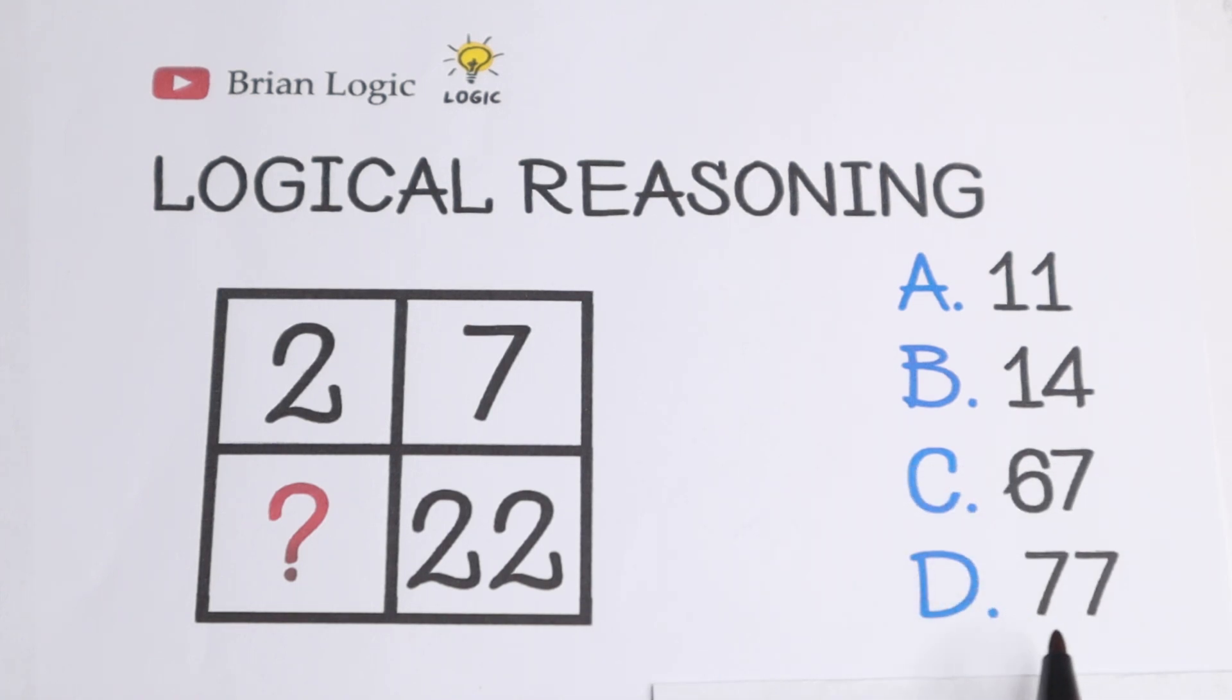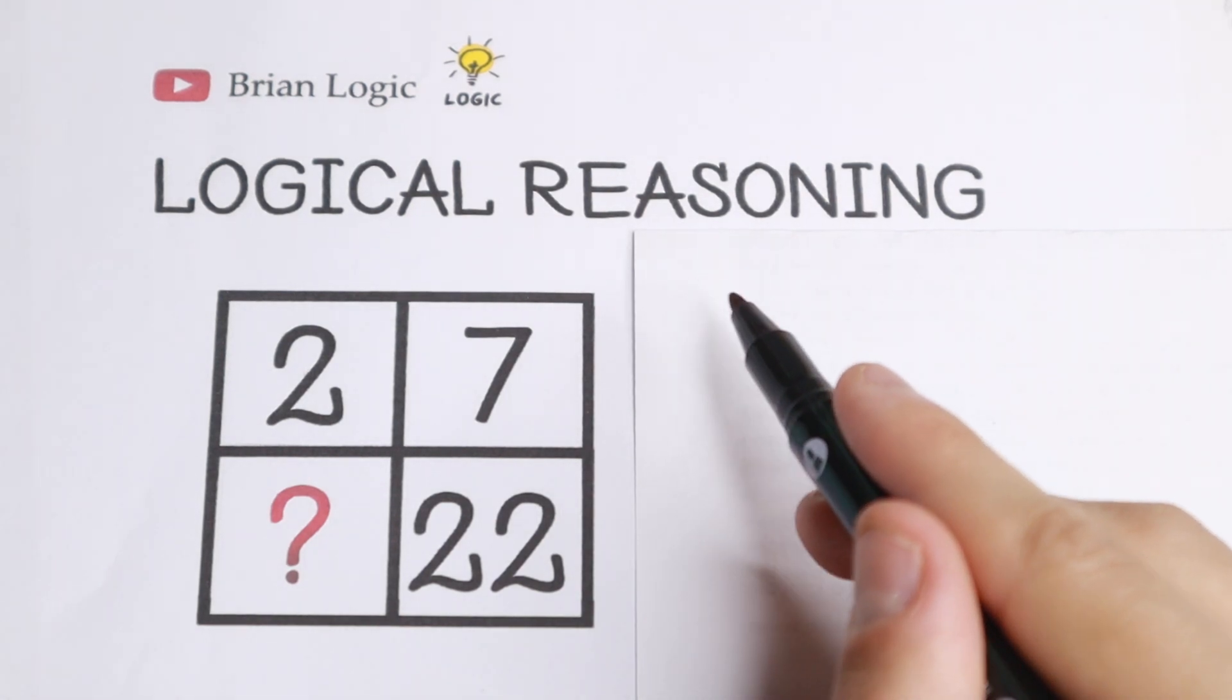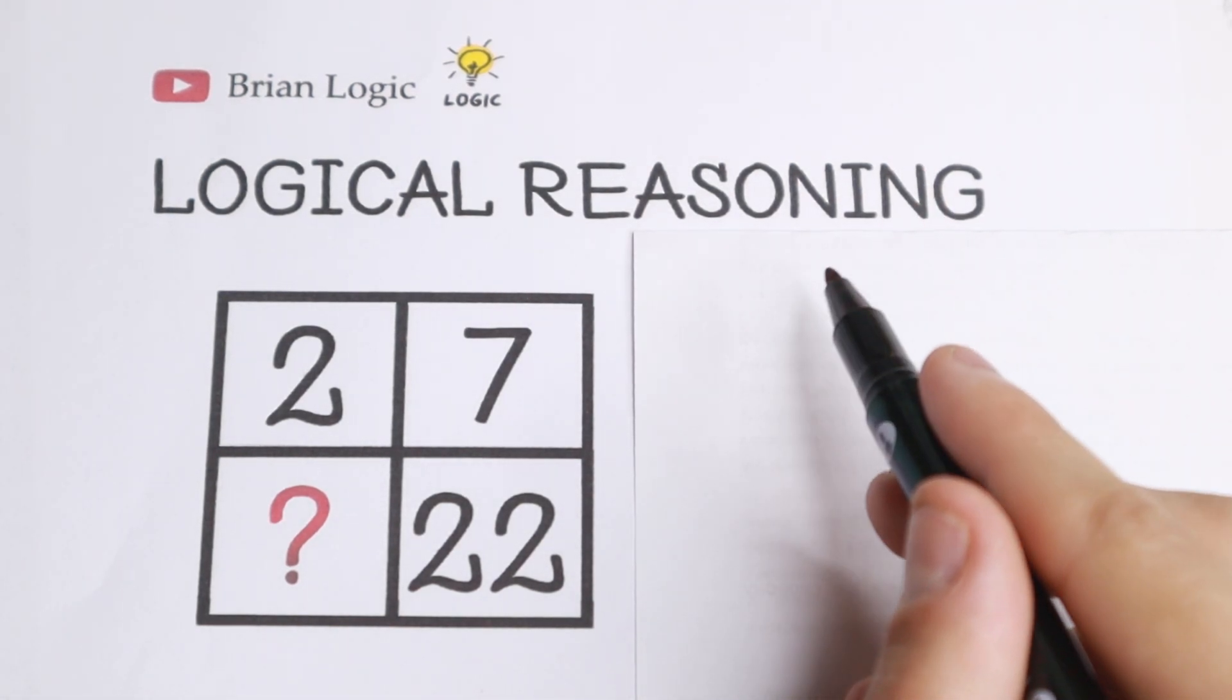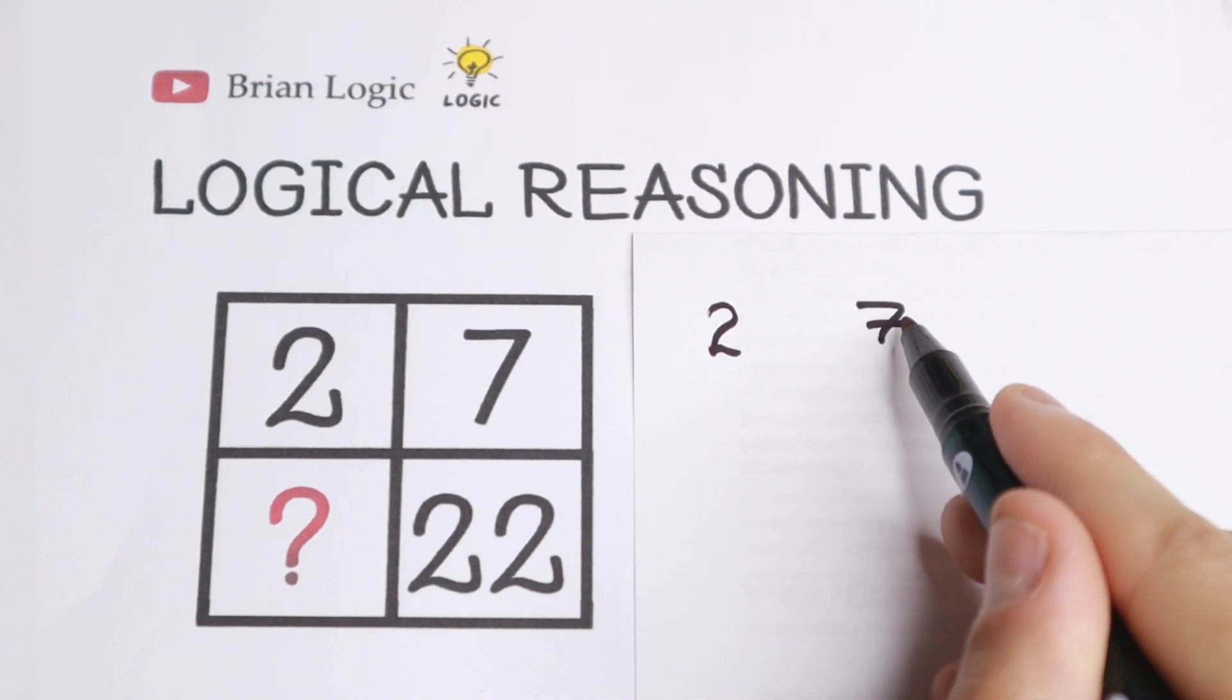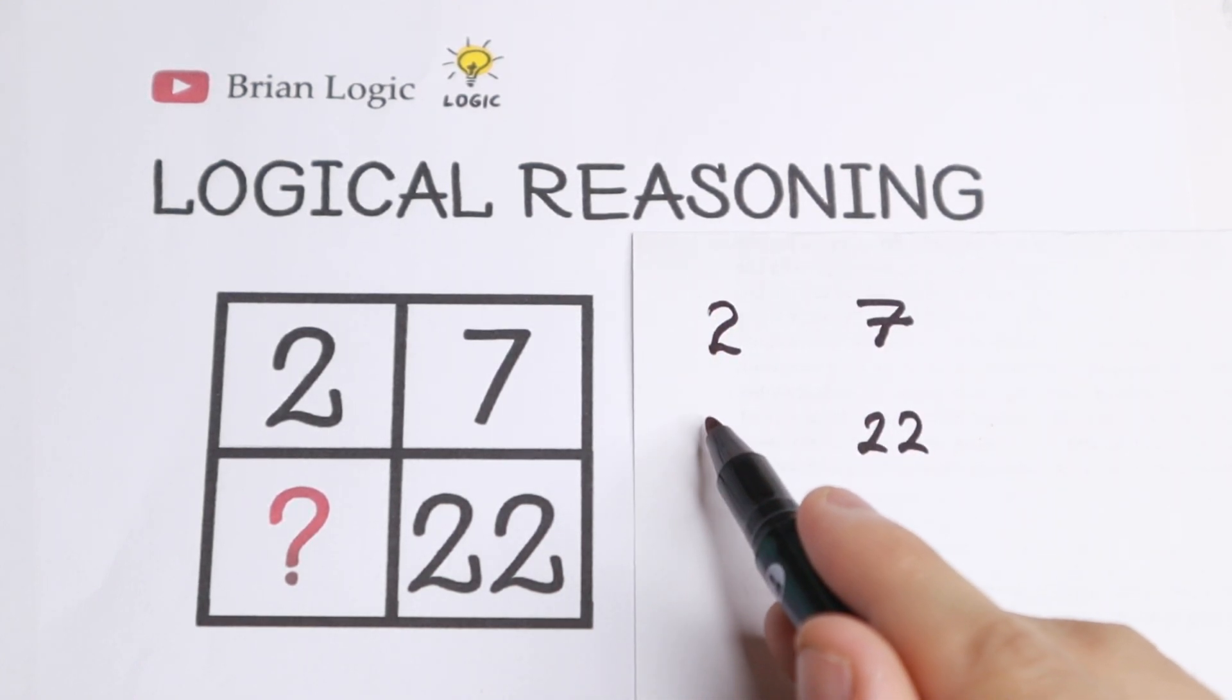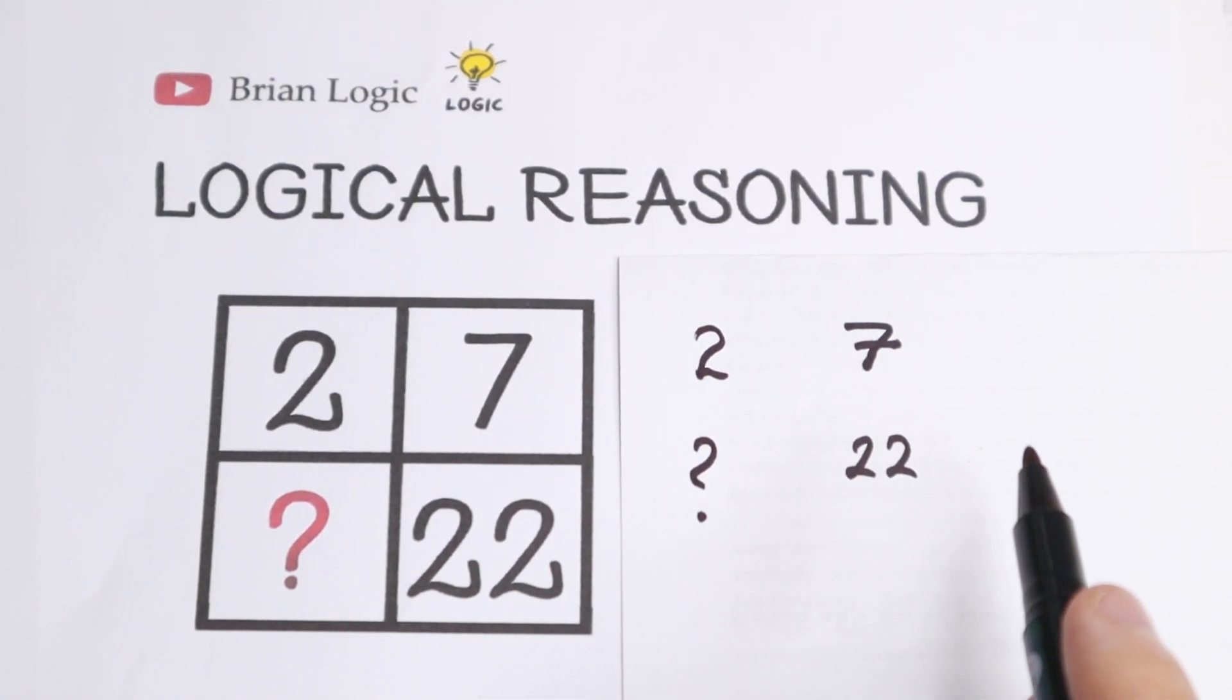Okay we have 11, 14, 67, 77. So choose one option and right now we are going to solve it. Okay we have 2, 7, 22 and we need to find the last number. I want to start with this one. I want to write this number. We have 2, we have 7, we have 22 and we need to find the last number right here. So I just rewrite this number right here on my paper.